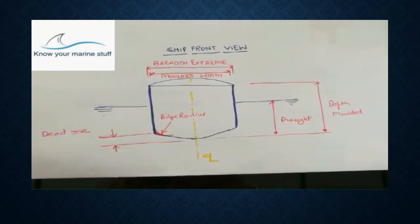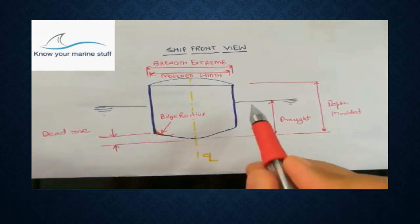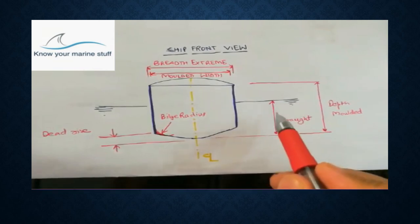Then draft of ship. Draft of ship is measured as molded draft, which is the distance from the baseline to the waterline. Here is the baseline and here is the waterline, and this is draft.